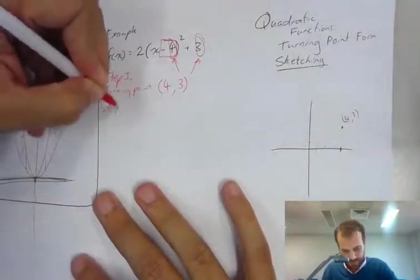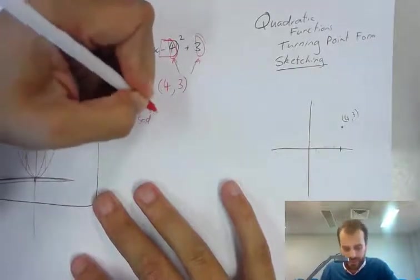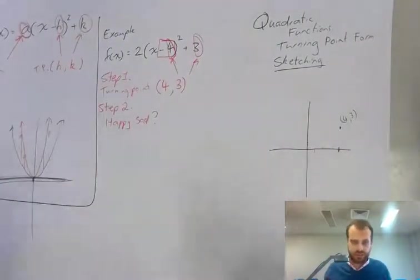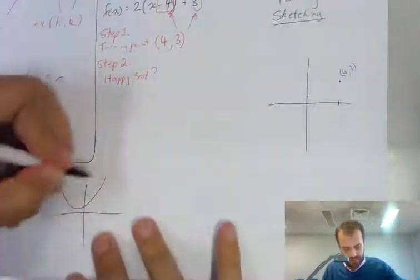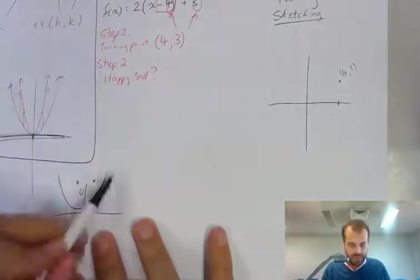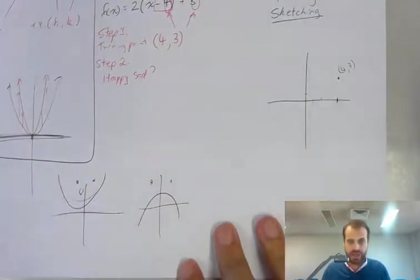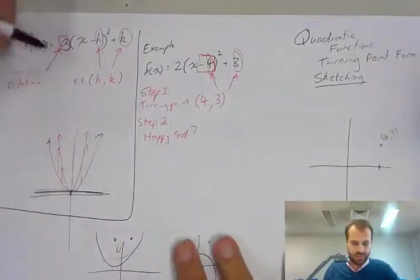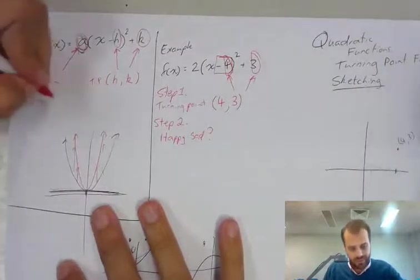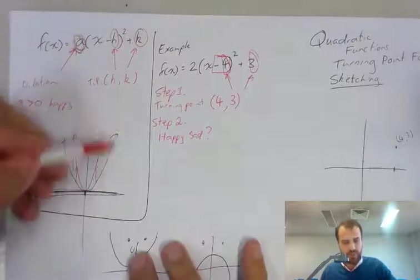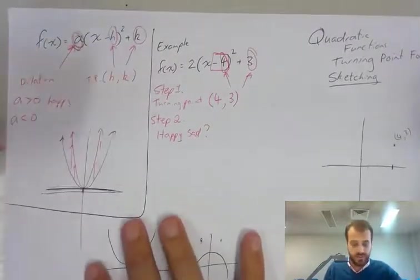Step 2. This is a bit silly, but it helps. Happy or sad? So is this a happy quadratic or is this a sad quadratic? What I mean by that is does it look happy with a happy face, or does it look sad with a sad face? The thing that's going to change that is our dilation. If a is greater than 0, it's going to be happy. And by default, our x squared is an a value of 1, so it's happy. If a is less than 0, if a is negative, then it's going to be sad.